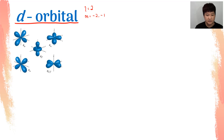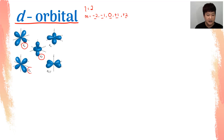Next and last but not least, let's look into the D orbital. D orbital means L is equals to 2. M therefore equals to negative 2, negative 1, 0, positive 1, and positive 2. So I have five values of M, therefore D will have five orientations. These orientations are DYZ, DXY, DZ², DXZ, and DX²-Y².